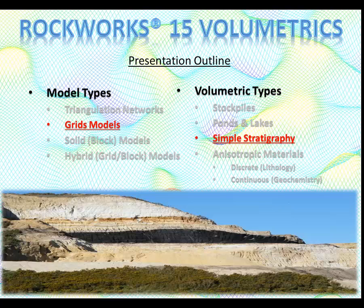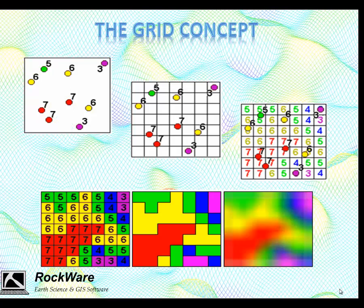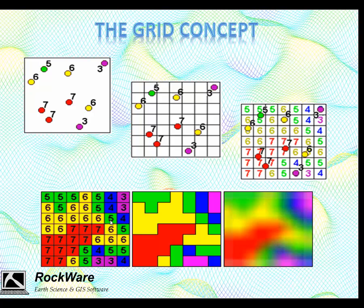Moving back to our outline, the next topic is grid models and how they can be applied towards simple stratigraphy. The basic idea behind a grid is you start out with a series of irregularly distributed control points, superimpose an imaginary grid over the project area, and at the center of every cell within this grid we estimate a value by looking at the surrounding control points. If we color-code those values, we can produce a color-coded contour map. More importantly, the cells provide a means for computing volumes.